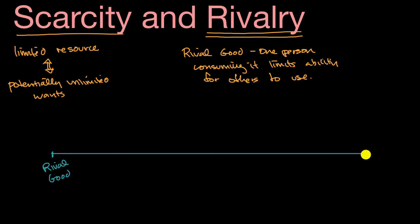At the left end, it's pretty easy to come up with rival goods. If you're living in a place where housing is tight, where all the housing is taken up, housing is often a rival good.